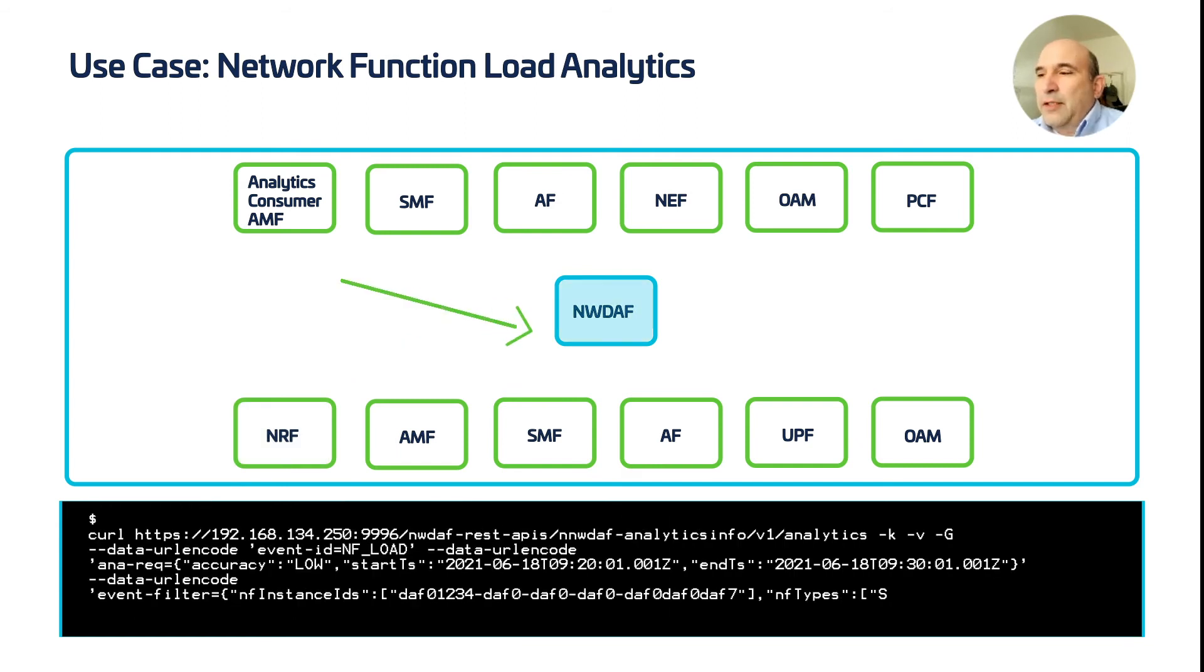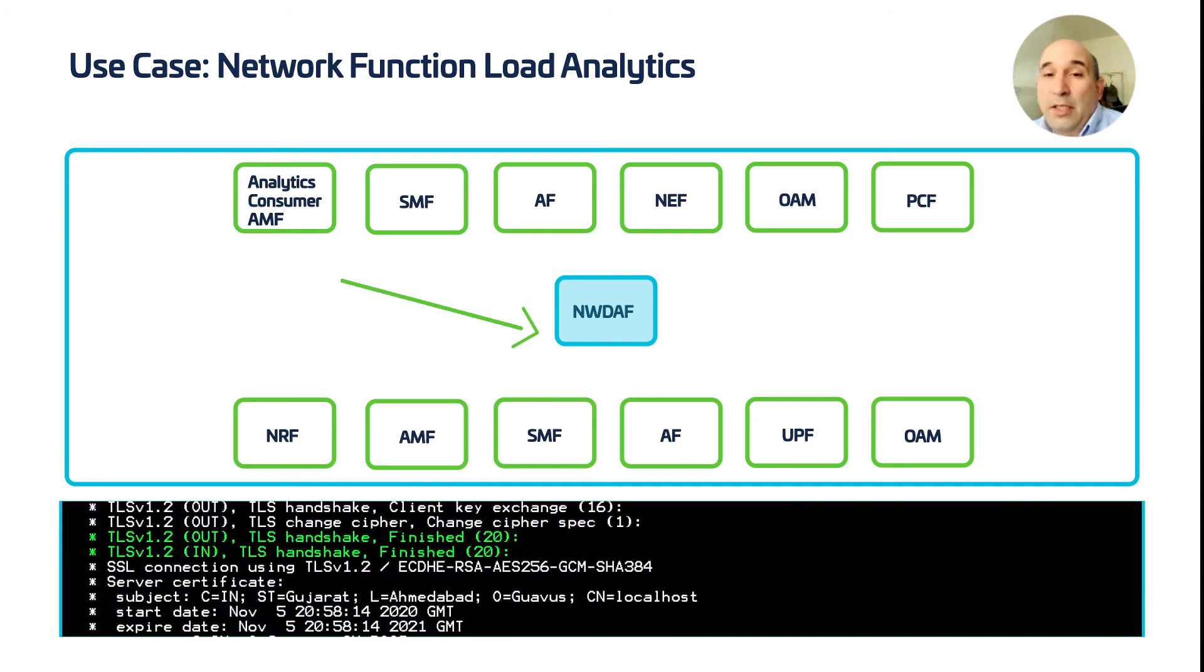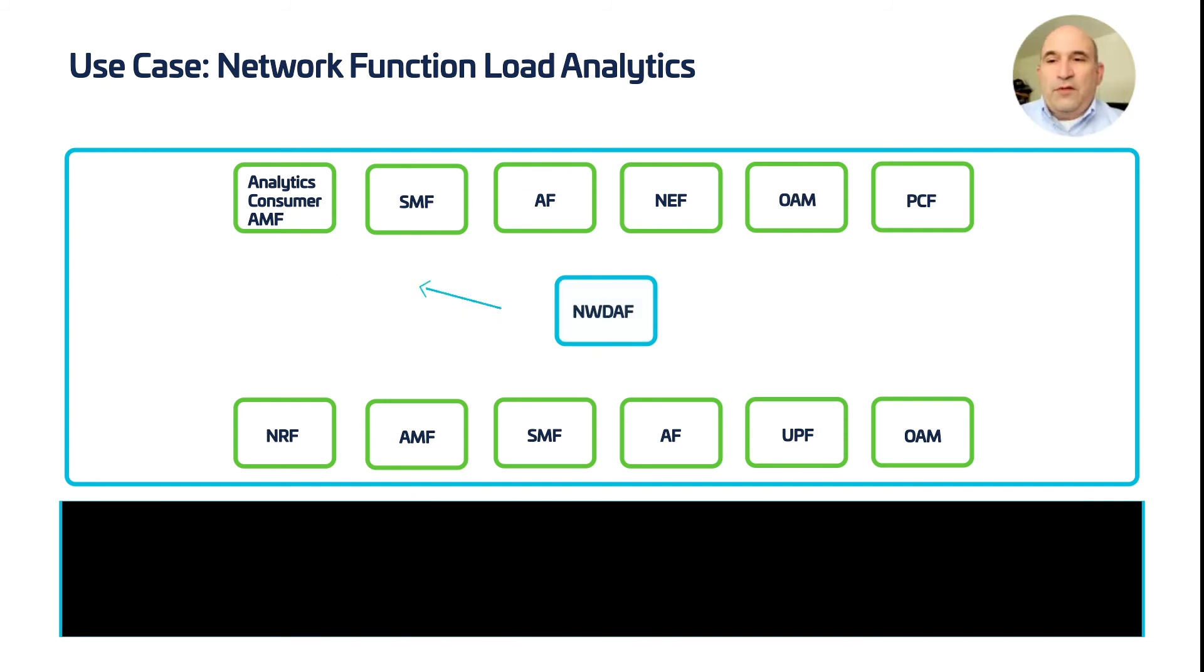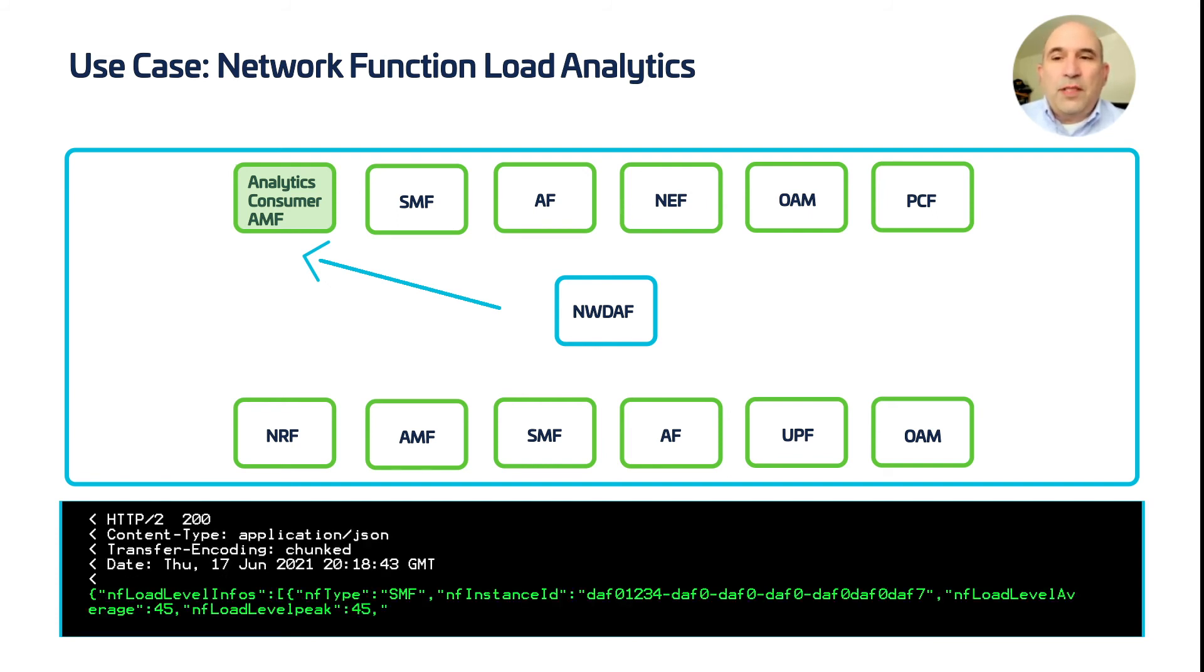Here we see an example of an analytics consumer making an immediate request for the prediction values for the SMF instance beginning David Alpha Foxtrot. The client negotiates a TLS connection and then sends an HTTP GET request. The 5G IQ NWDAF responds with HTTP 200 indicating success, along with the average and peak predicted load values for the requested period, and a confidence value for the prediction.